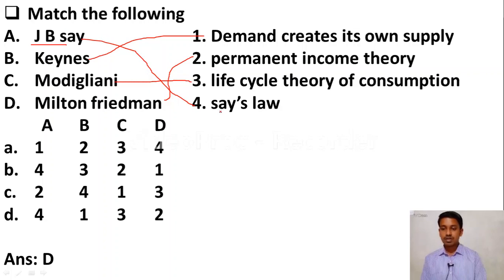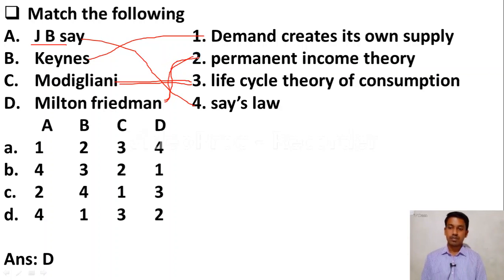To summarize: A — J.B. Say, Say's Law. B — J.M. Keynes, demand creates its own supply. C — Modigliani, life cycle theory. D — Milton Friedman, permanent income hypothesis. Please remember this. Let us move to the next question.